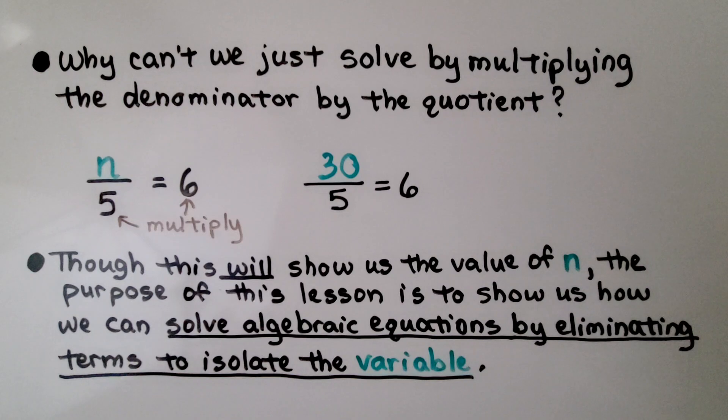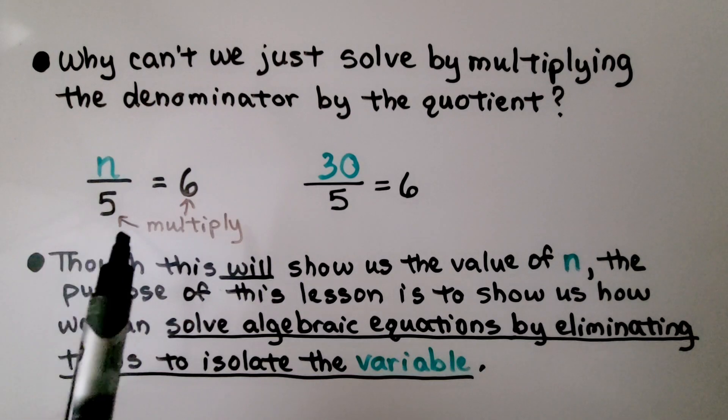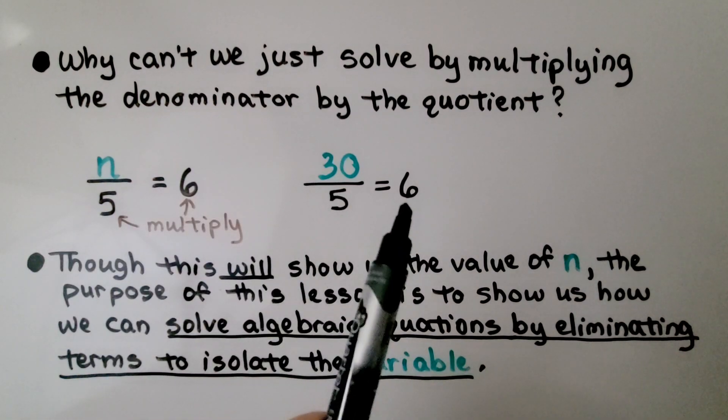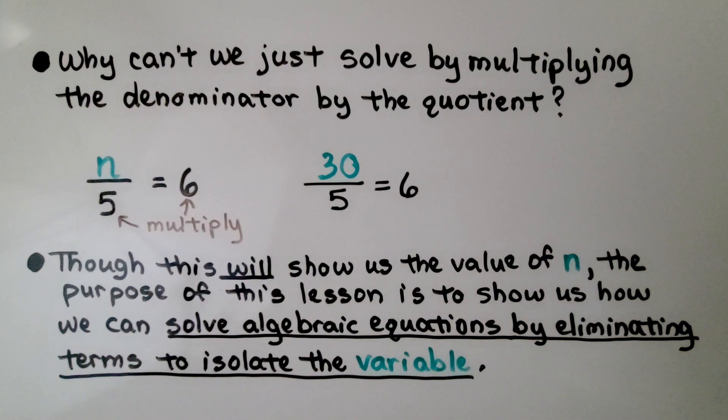Now some of you may be thinking, why can't we just solve by multiplying the denominator by the quotient? That'll work. We can multiply 5 times 6 to get 30, and know that 30 divided by 5 is equal to 6. Yes, though this will show us the value of n, the purpose of this lesson is to show us how we can solve algebraic equations by eliminating terms to isolate the variable. That's the purpose of this lesson.